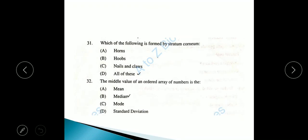Question number 31: Which of the following is formed by stratum corneum: horns, hooves, nails and claws? The answer will be D, all of these. The middle value of an ordered array of numbers is option B, median.